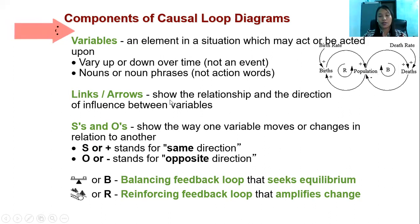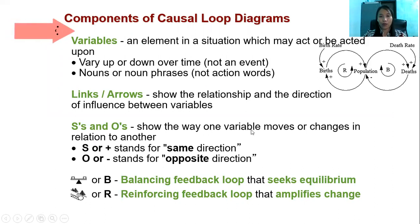Links and arrows show the relationship and the direction of influence between variables, represented by link arrows. We have S and O's, or positive and negative, which show the way one variable moves or changes in relation to another.